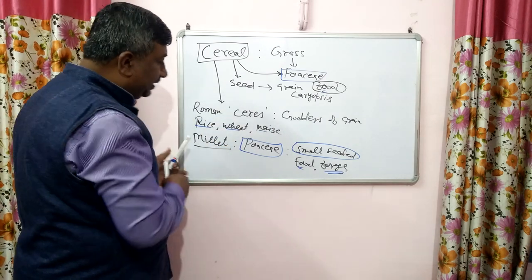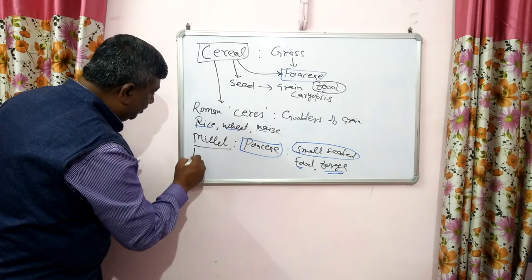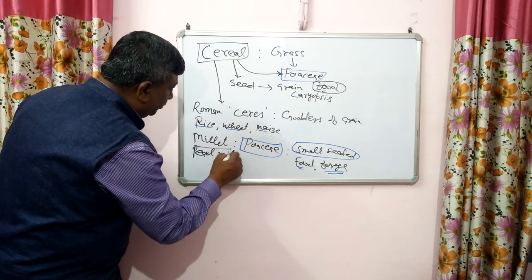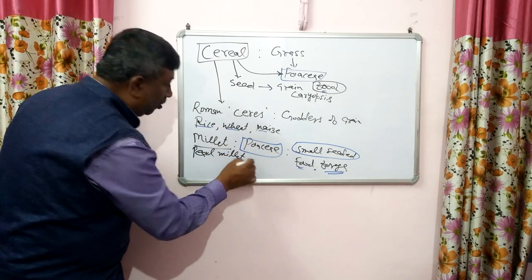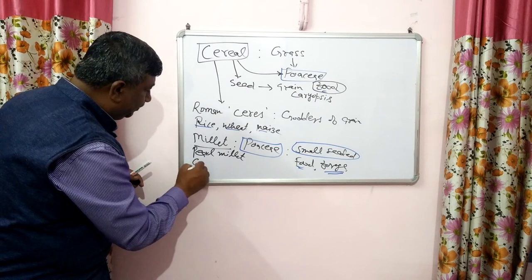Examples of millets include pearl millet and sorghum. Sorghum is known as great millet because it can tolerate drought very efficiently — we can get some yield even in harsh conditions.